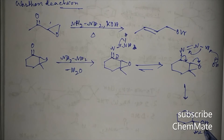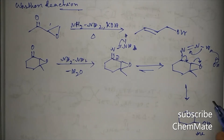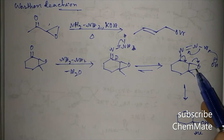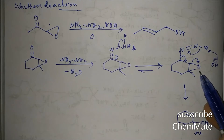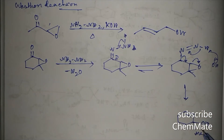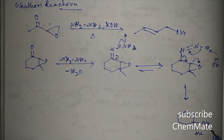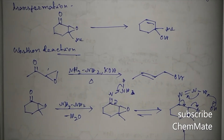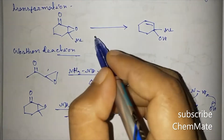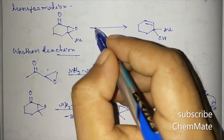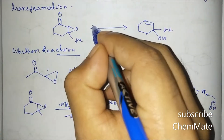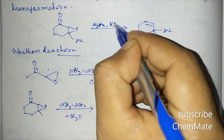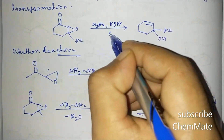The stereochemistry of this allylic alcohol follows the stereochemistry of the epoxide. If the epoxide is below the plane, the OH in the product will also be below the plane. So the reagent for this transformation is N2H4 with KOH under heating conditions.